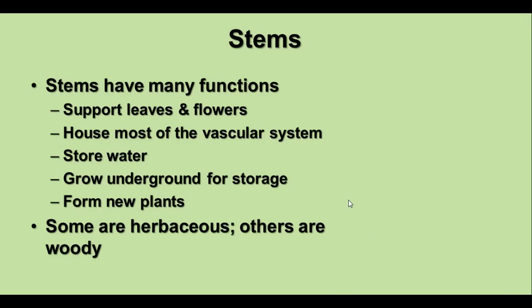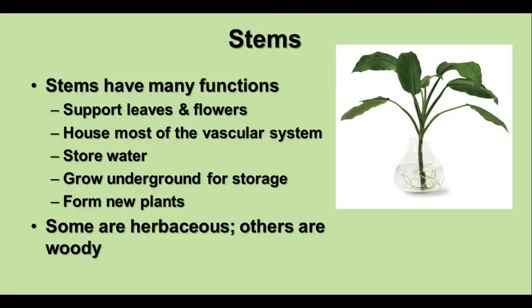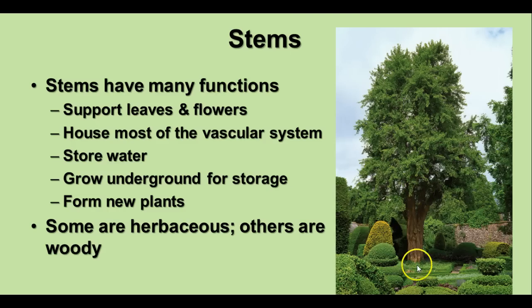Stems have many different functions. They support the leaves and flowers, and they're the location of most of the vascular system. Stems can be used to store water, and they sometimes grow underground structures for storage, like potatoes. You can also form new plants from stems. Some stems are herbaceous — like a green stem that's softer — and others are woody, like the bark of a tree.